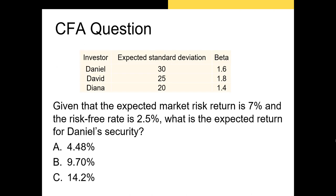Let's try another CFA Level 1 question where we calculate the expected stock return for a given security. Given that the expected market risk return is 7% and the risk-free rate is 2.5%, what is the expected return for Daniel's security? We have three investors with different standard deviations and betas. Note that the CFA refers to this as the market risk return, but this is just the return on the market, R sub M.